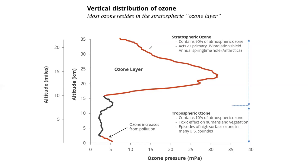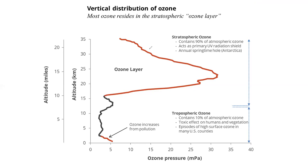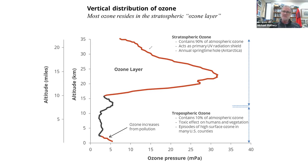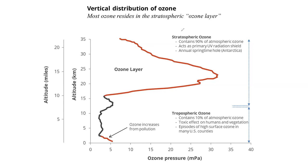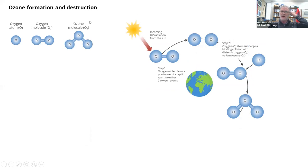Does that diagram make sense? A student confirms: stratospheric ozone is destroyed naturally but there's a little bit controlled by humans. That's well put — it's created naturally, it's destroyed naturally, but there is something going on in the ozone layer in the stratosphere that humans play a role in, and that's what we'll get to shortly.